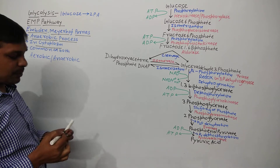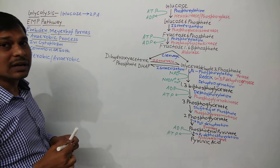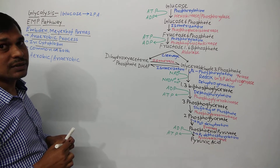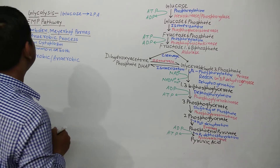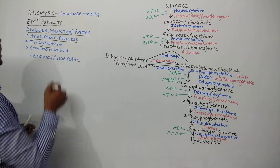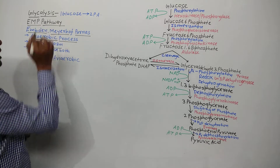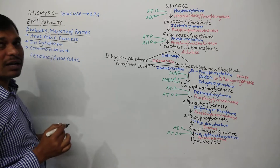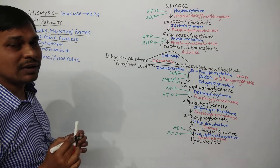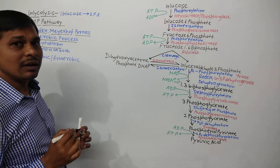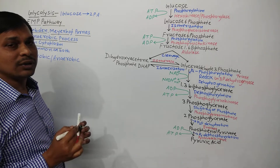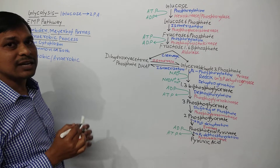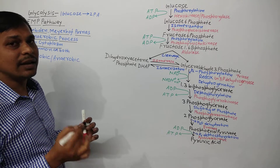Glycolysis is also known as the EMP pathway, and it is the common pathway in both aerobic as well as anaerobic respiration.